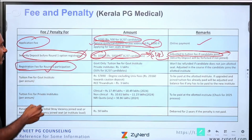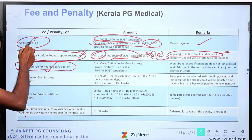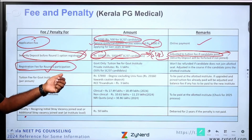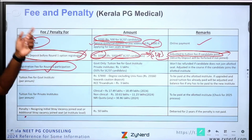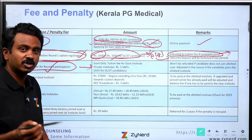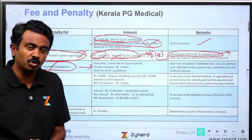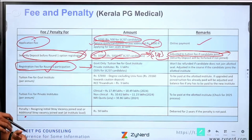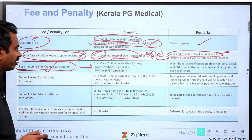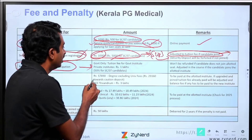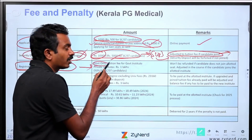Registration fee for round 3 participation: what you are doing now is the application to be part of the merit list. For round 2, they will not open fresh registrations — you have to register and fill choices now itself, because round 1 choices only will be carried forward to round 2. No fresh choice filling will be given. You can delete choices, but you cannot add choices, and that is dependent upon whether you are allotted a seat. Round-wise rules will be covered separately.